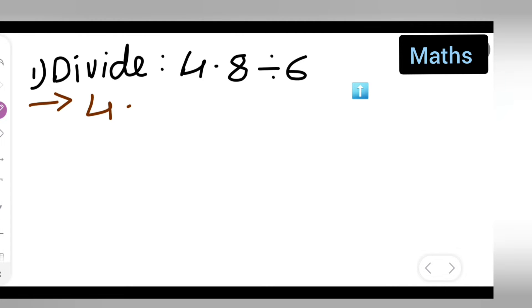4.8 divide by 6. Now basically this is equal to - I'm going to remove the decimal point - so write down 48 upon 10. Or write down directly divide by 6. So we are going to divide: